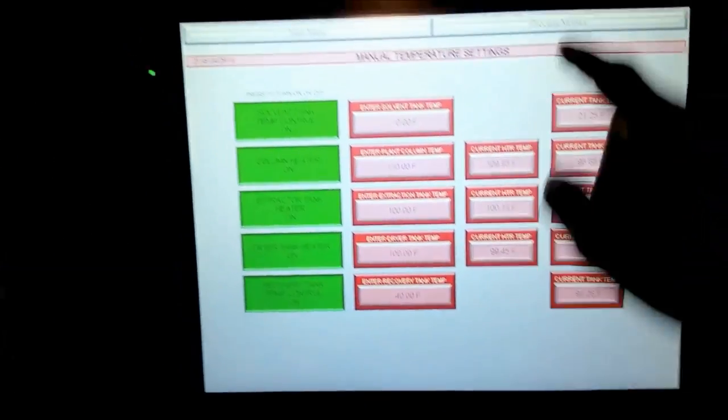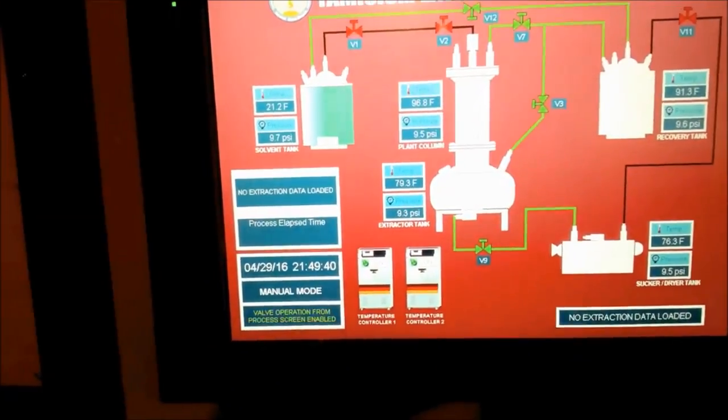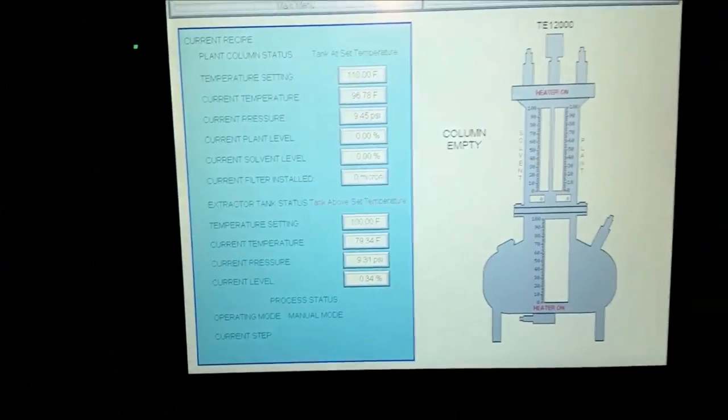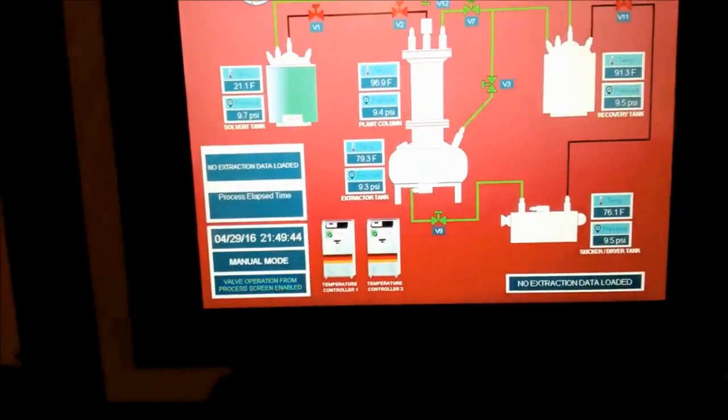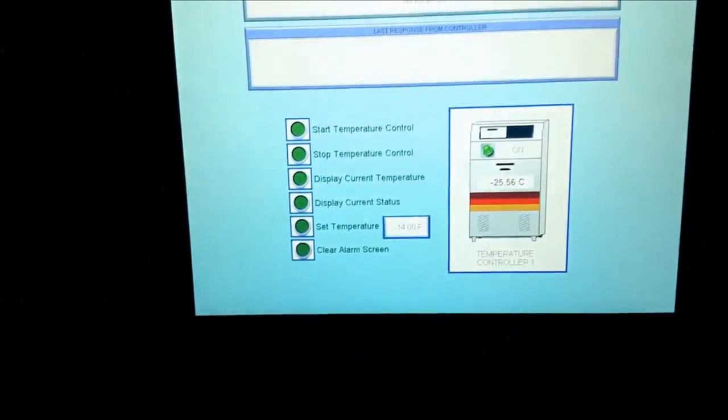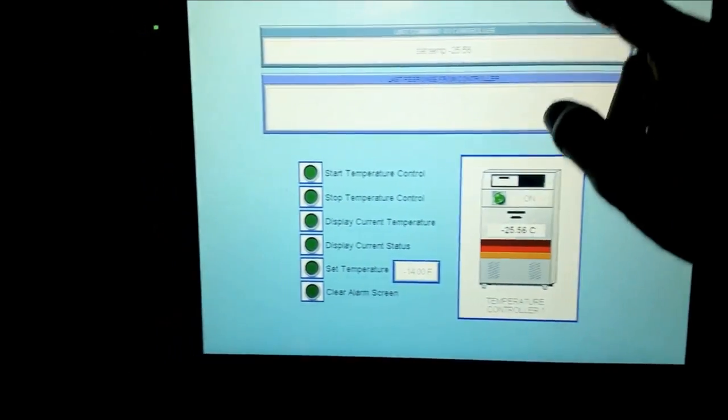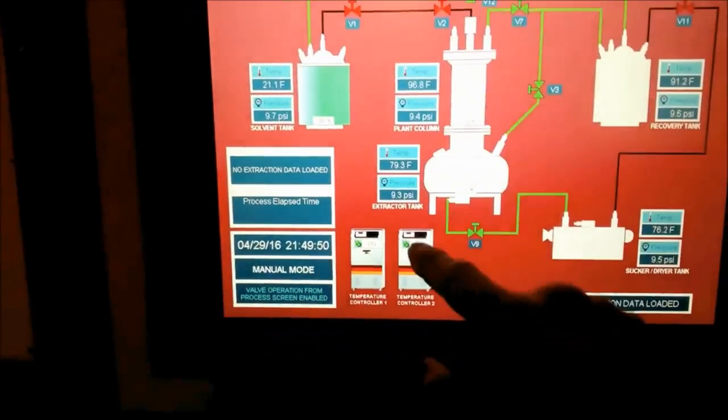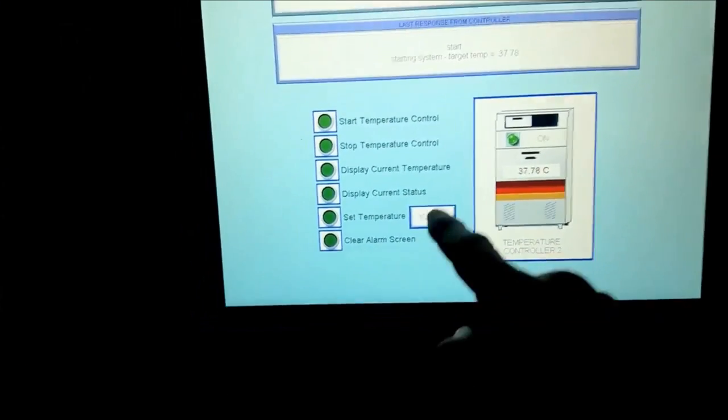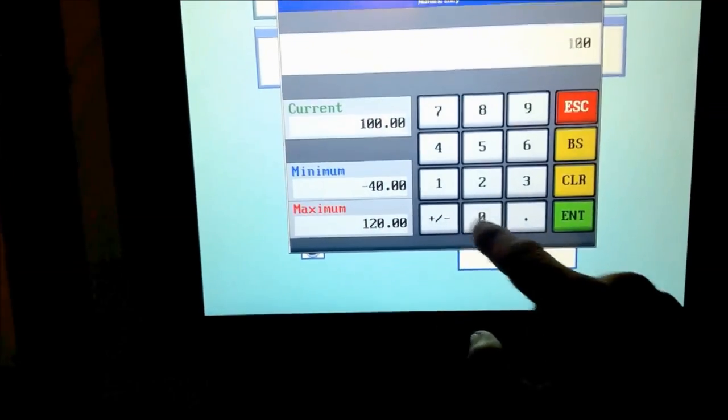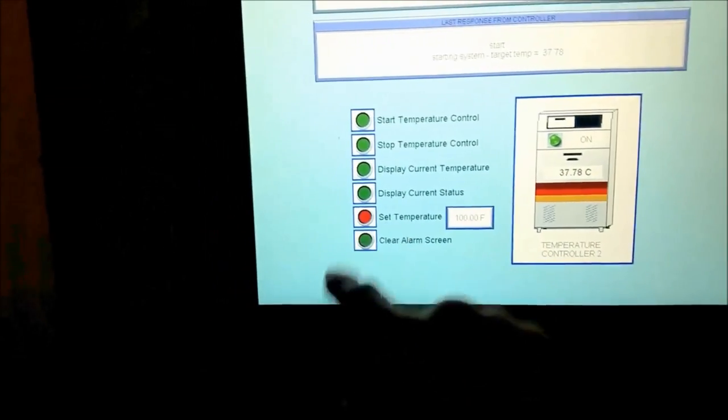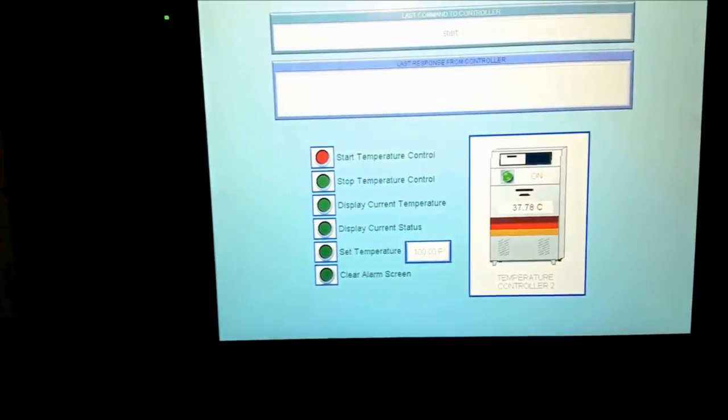Go on to the temperature settings, go on to the properties of each tank, go into the chiller for each chiller. You can set its temperature, you know, set the temperature, start temperature control.